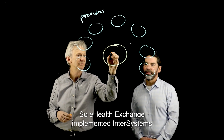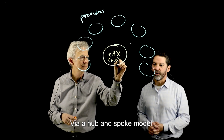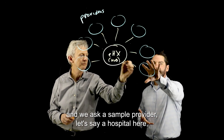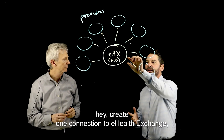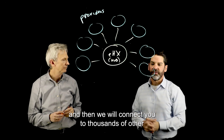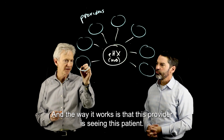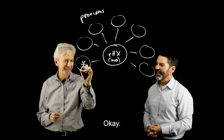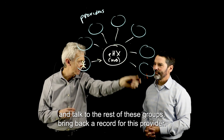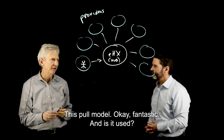eHealth Exchange implemented InterSystems' tech platform via a hub-and-spoke model. We created this centralized tech platform, and we asked a sample provider — let's say a hospital — to create one connection to eHealth Exchange, and then we would connect them to thousands of other trusted healthcare providers across the country. The way it works is that this provider is seeing a patient, and they ask, 'Do you know anything about this patient?' — and then you go out and talk to the rest of these groups and bring back a record for this provider. That's basically the pull model.